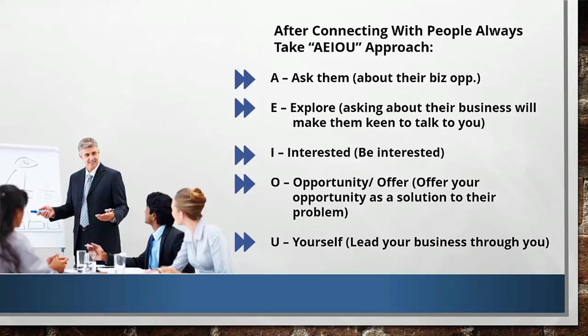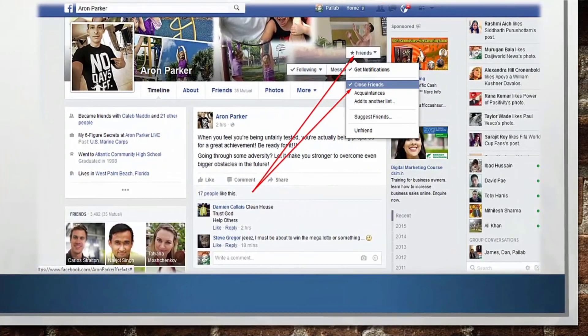Which brings us to one of the ninja tricks, which I'm going to show you live. It's called the Edge Ranking Mechanism. Let me go directly to my Facebook account so I can do it live. I'm inside my Facebook page. This is a very, very secret technique that we use. Once you master this simple trick, you can recruit 10 to 15 people per month for your business. Let's get started.